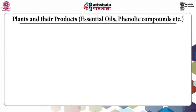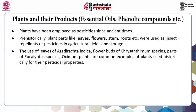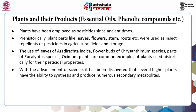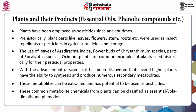Coming to the next classification — plants and their products. Plants have been employed as pesticides since ancient times. Prehistorically, plant parts like leaves, flowers, stems, roots, etc. were used as insect repellents or pesticides in agricultural fields and storage. The use of leaves of Azadirachta indica (neem tree), flower heads of Chrysanthemum species, parts of Eucalyptus species, and Ocimum plants are common historical examples. With advancement of science, it has been discovered that several higher plants have the ability to synthesize numerous secondary metabolites that can be extracted and used as biopesticides. The common metabolite chemicals from plants can be classified as essential oils and phenolics.